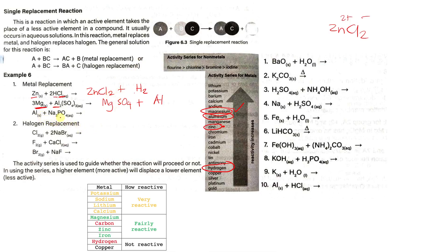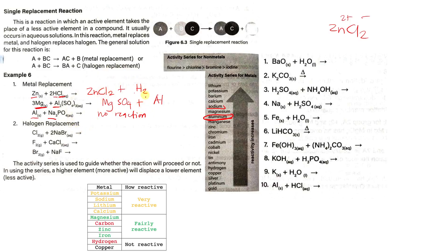For the third example, we have aluminum plus sodium phosphate. Al is a metal and sodium is also a metal, so aluminum might replace sodium in the compound. But looking at the activity series, aluminum is here and sodium is higher up. Aluminum is less active compared to sodium, so it cannot replace sodium. There will be no reaction. There will only be a reaction when a more active element replaces a less active element in a compound.